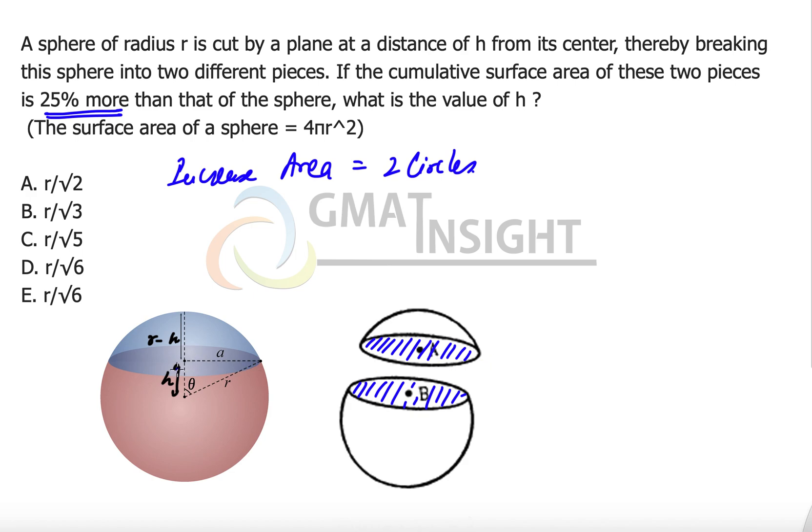So the radius of these circles: we already know that this was distance h and this entire distance was radius. So the remaining distance is r minus h, and this distance is r. So this particular distance, that means the radius of these two smaller circles, will be equal to—we can use the Pythagorean theorem here and can say that this value will be equal to square root of r square minus h square.